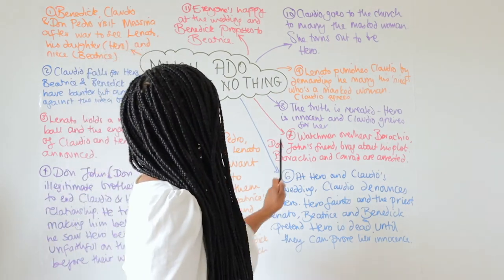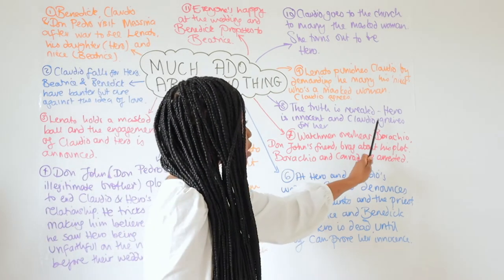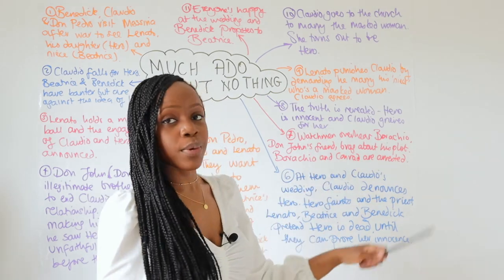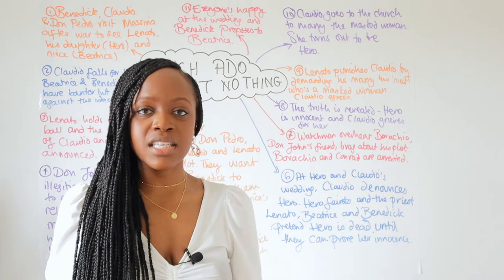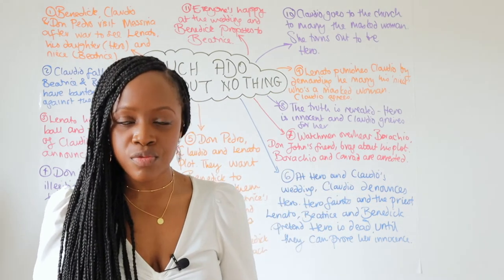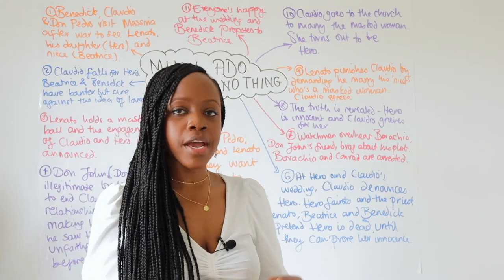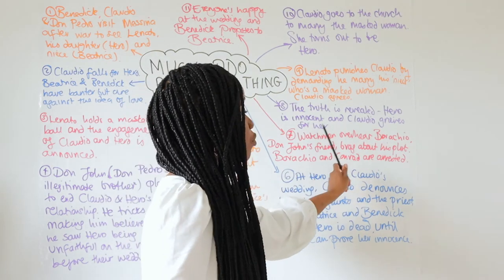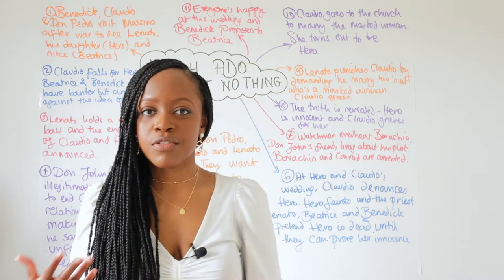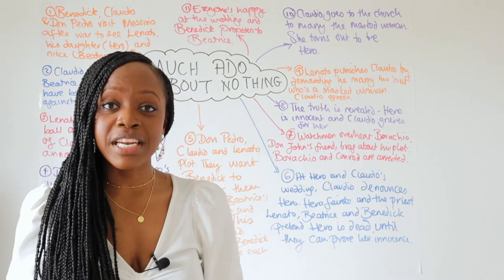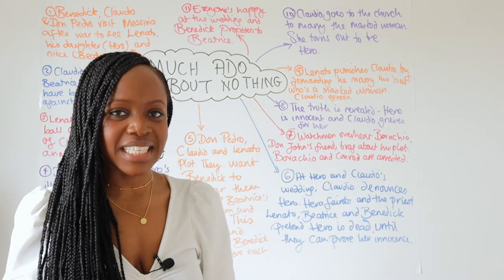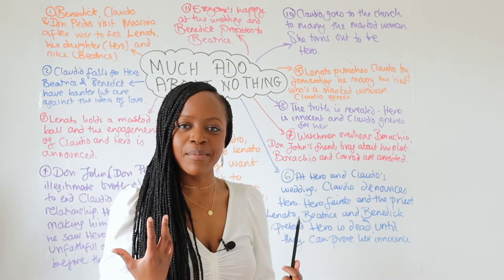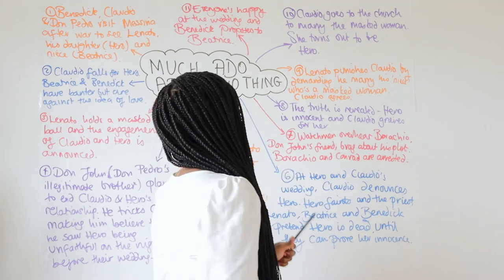The truth is ultimately revealed that Hero is innocent and that it was a complete trick by Don John. Claudio grieves for her because he believes Hero is dead — this is part of the comedy element of the play.